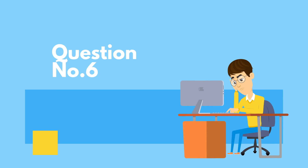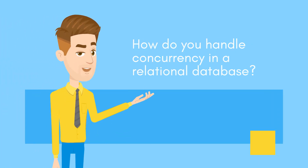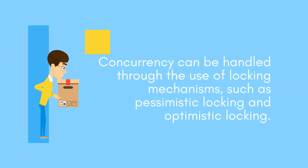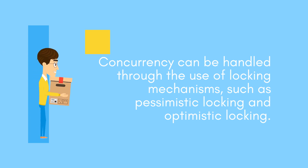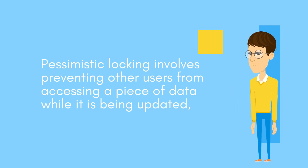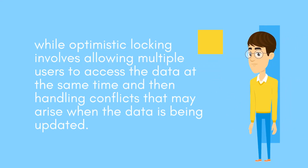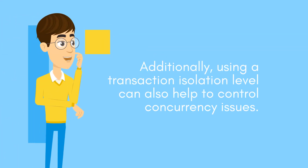Question number six: How do you handle concurrency in a relational database? Concurrency can be handled through the use of locking mechanisms, such as pessimistic locking and optimistic locking. Pessimistic locking involves preventing other users from accessing a piece of data while it is being updated, while optimistic locking involves allowing multiple users to access the data at the same time and then handling conflicts that may arise when the data is being updated. Additionally, using a transaction isolation level can also help to control concurrency issues.